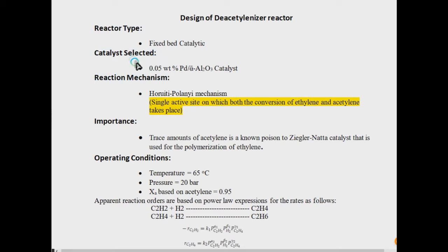First, we have to select a catalyst based on our process type or project. In our design of the acetylene reactor, from literature reference, we use 0.05 weight percent palladium over alumina catalyst.